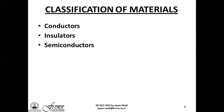Starting off, materials can be classified into a number of categories based on their chemical properties, physical properties, thermal properties, etc. Electrically, since we are learning from our school days, materials can be classified into three main types: conductors, insulators, and semiconductors.